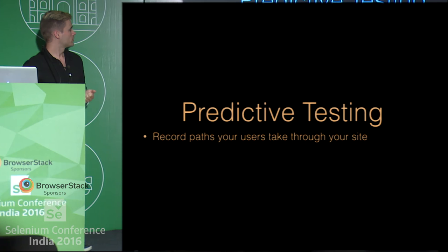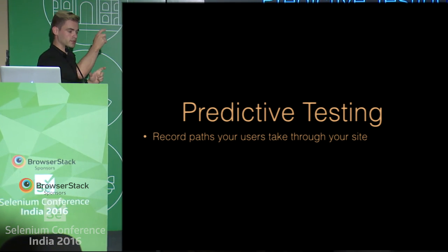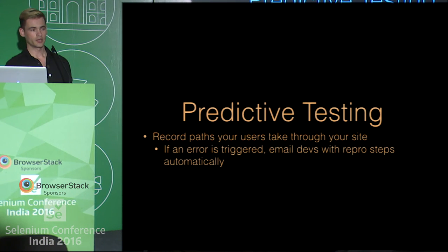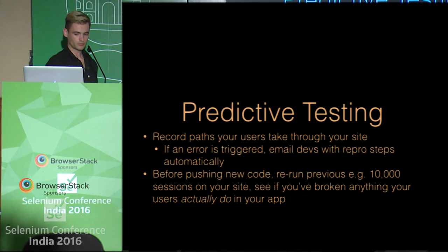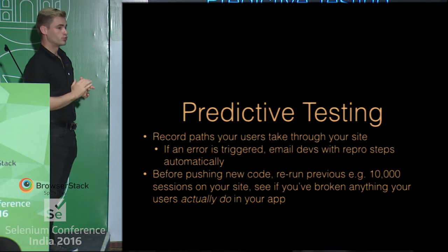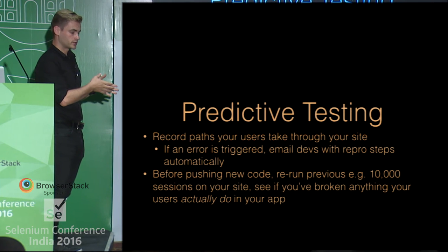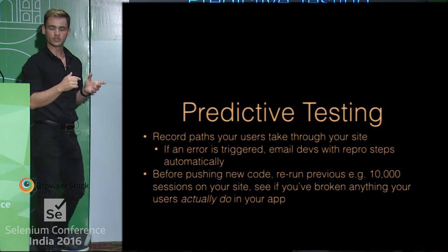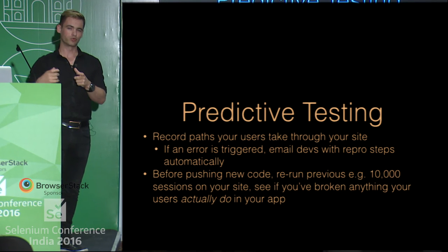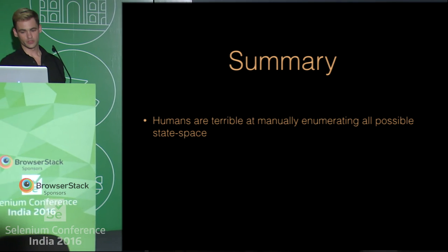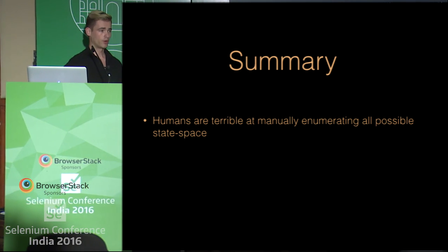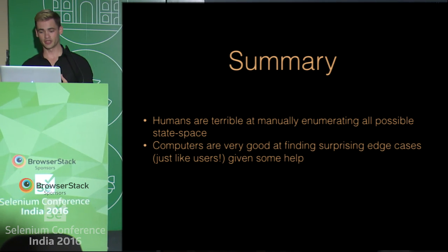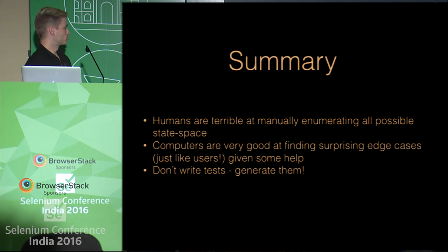Another really cool thing is predictive testing. Just like we had that declarative simple data structure as a repro case, we actually record the actual user's path through our site. If an error is triggered, we automatically email the developers with that repro case. Another thing we can do is take the previous 10,000 sessions — a rolling window — and before we push any new code, replay those 10,000 sessions against the new code. So before we push this code, we ask: is this new code going to break anything that our users are actually doing? In summary: humans are really terrible at manually enumerating all possible state space, and computers are really bad at being creative about it. But they are very good if we teach them to find edge cases. Most importantly: don't write tests, generate them.